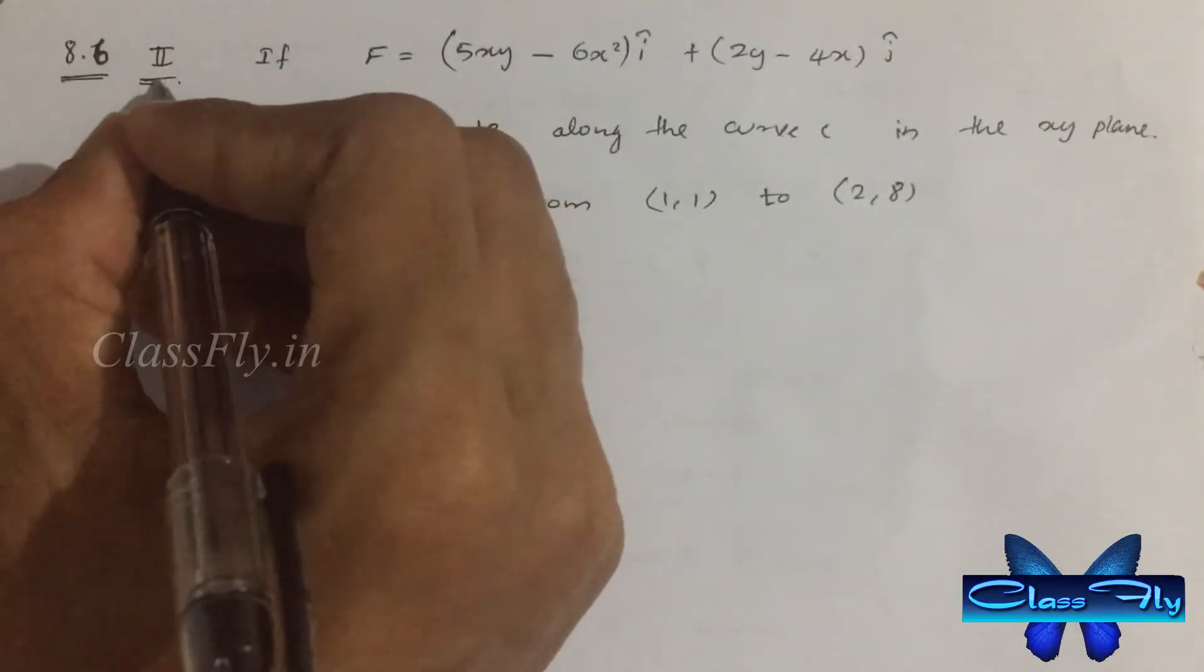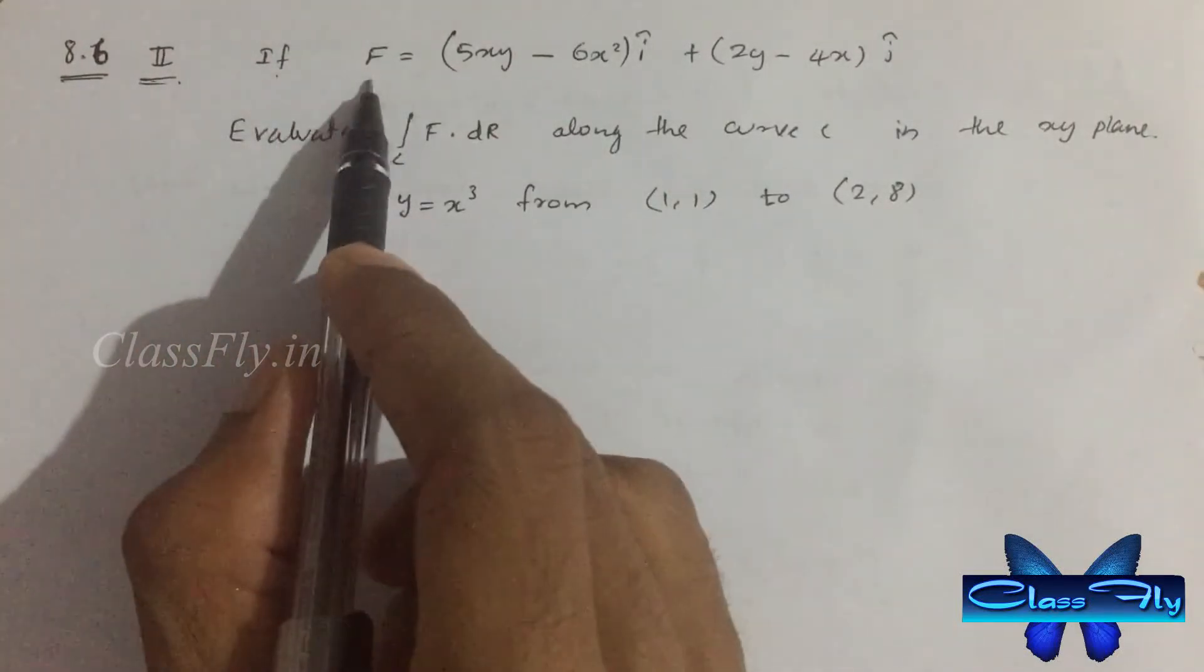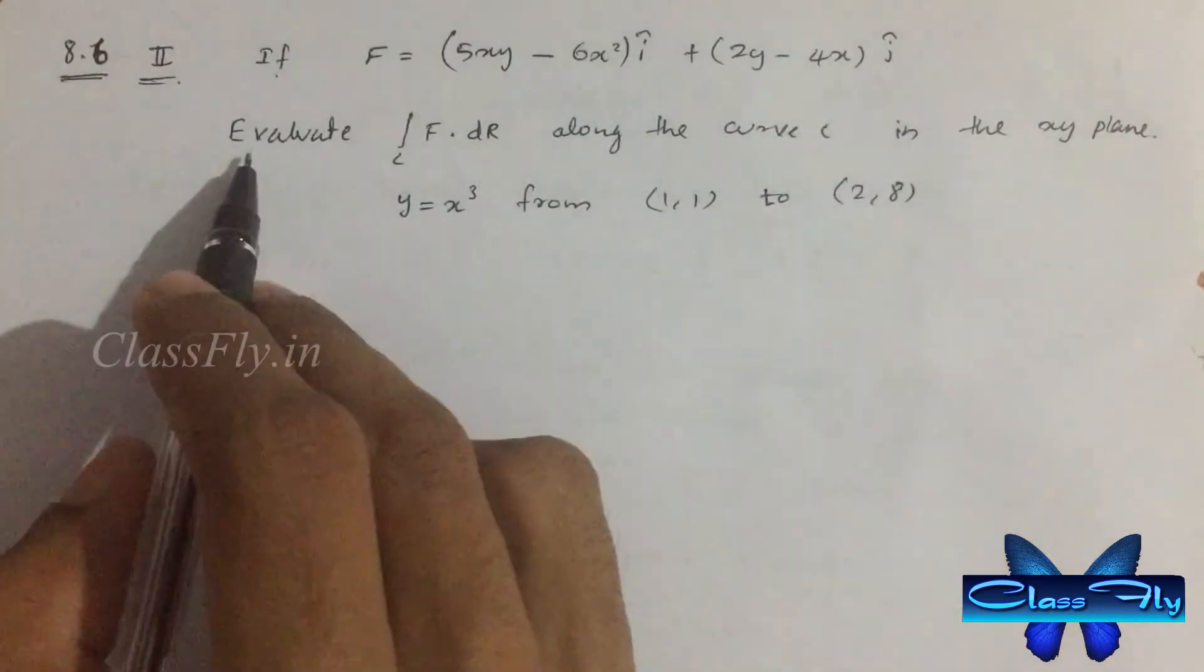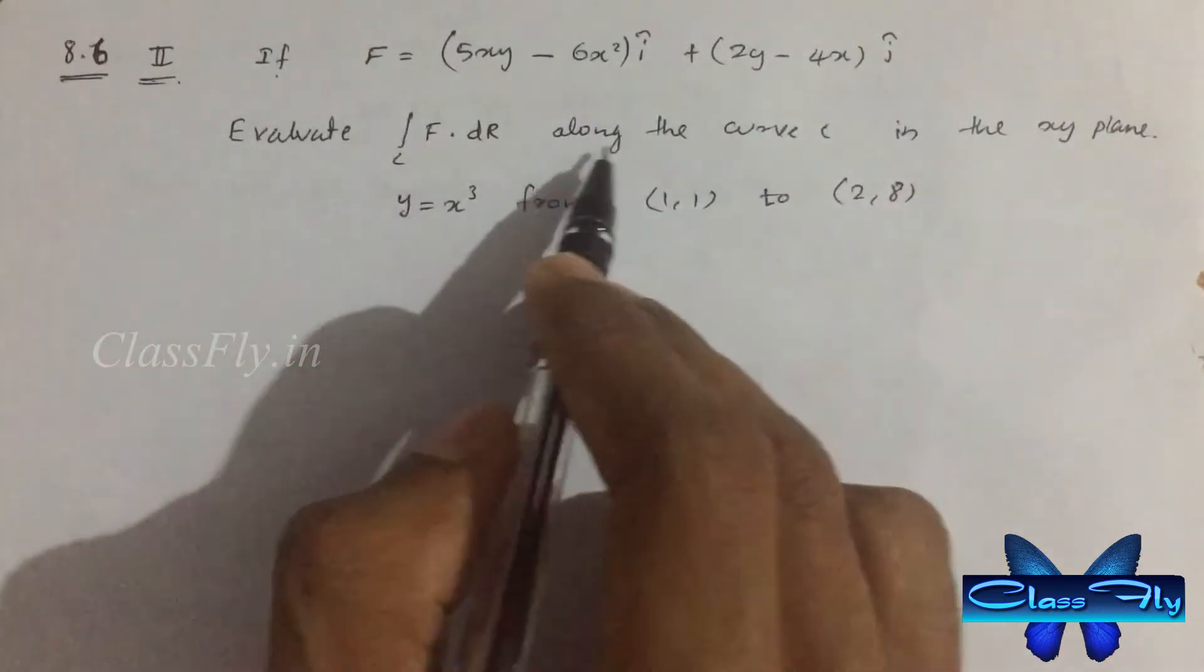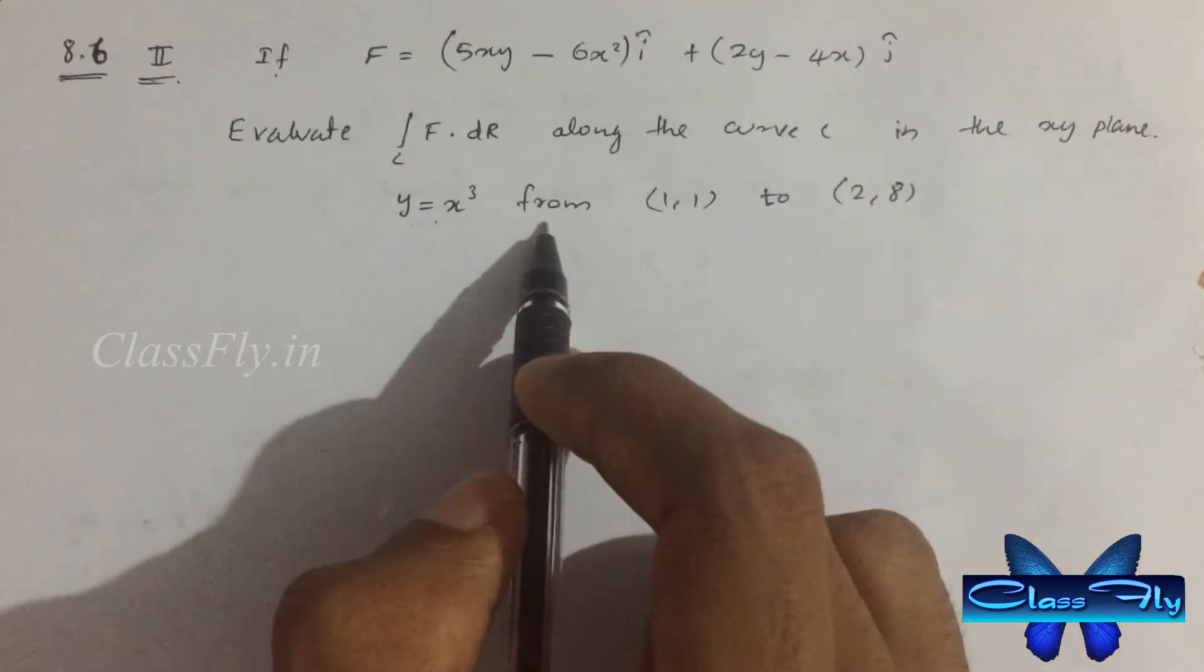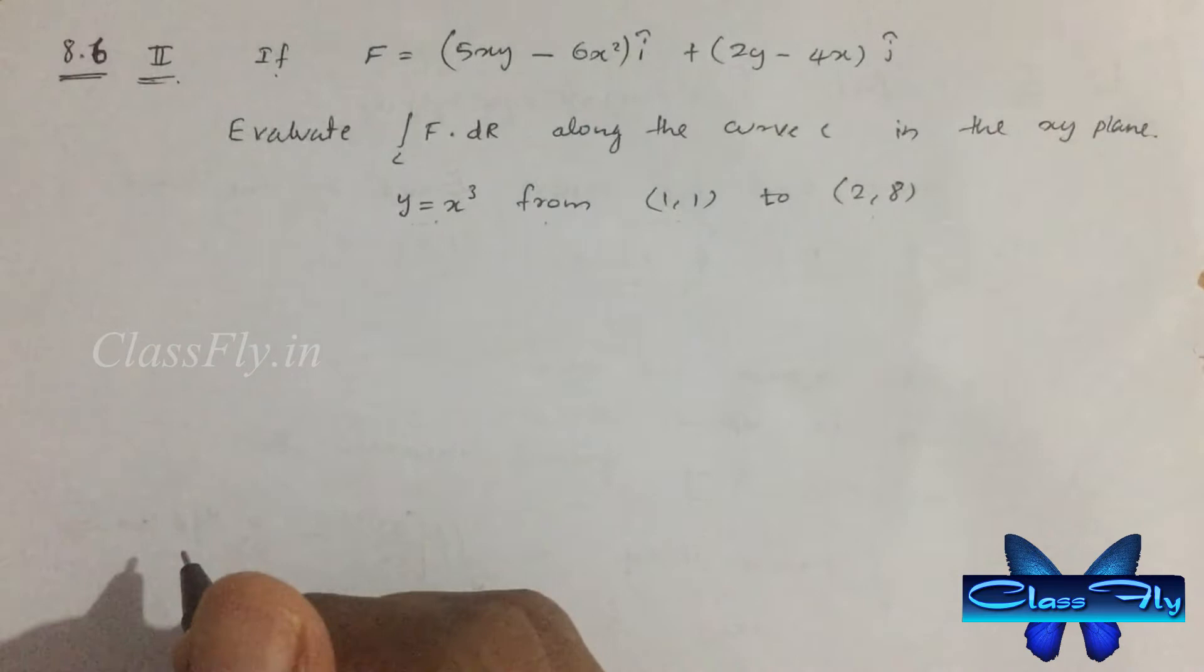Exercise 8.6, second question. If f equals 5xy minus 6x square i cap plus 2y minus 4x j cap, evaluate integral c f dot dr along the curve c in the xy plane where y equal to x cube from 1,1 to 2,8.